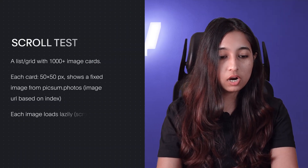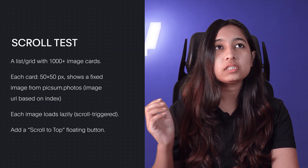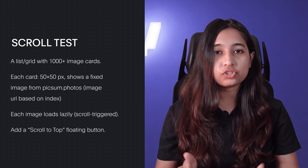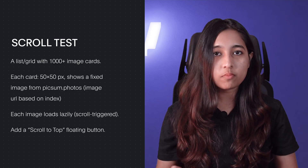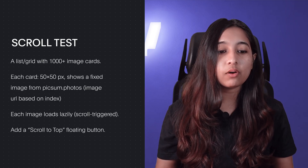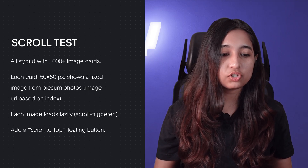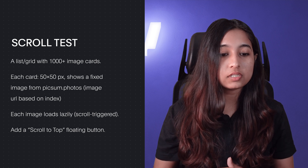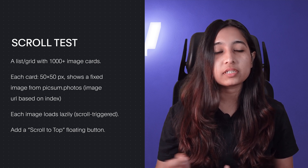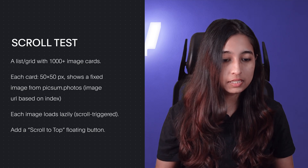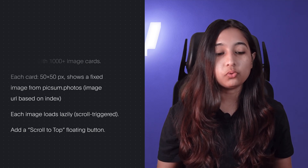All right, let's talk about the first test: the Image Grid test. It's basically a grid with 1000-plus image cards, each card 50 by 50 pixels, showing a fixed image from the pixel.photo site. Each image also loads lazily as you scroll.